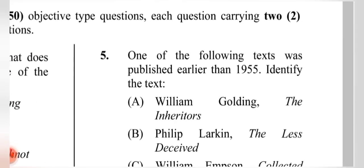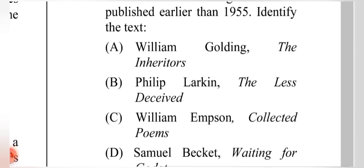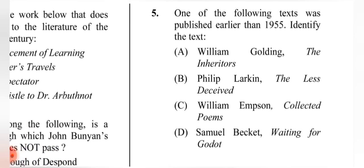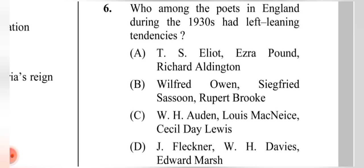Question 5: One of the following texts was published earlier than 1955. The correct option is (D) Samuel Beckett's 'Waiting for Godot,' which we all know is an absurdist play. Question 6: Who among the poets in England during the 1930s had left-leaning tendencies? The correct answer is (C) W.H. Auden.